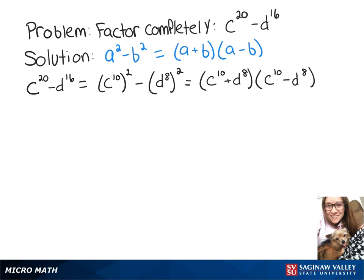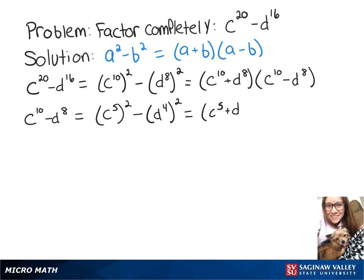Looking at that c to the 10th minus d to the 8th, we can use the difference of squares formula again on that. So we can rewrite it as c to the 5th squared minus d to the 4th squared. And then that's equivalent to c to the 5th plus d to the 4th times c to the 5th minus d to the 4th.